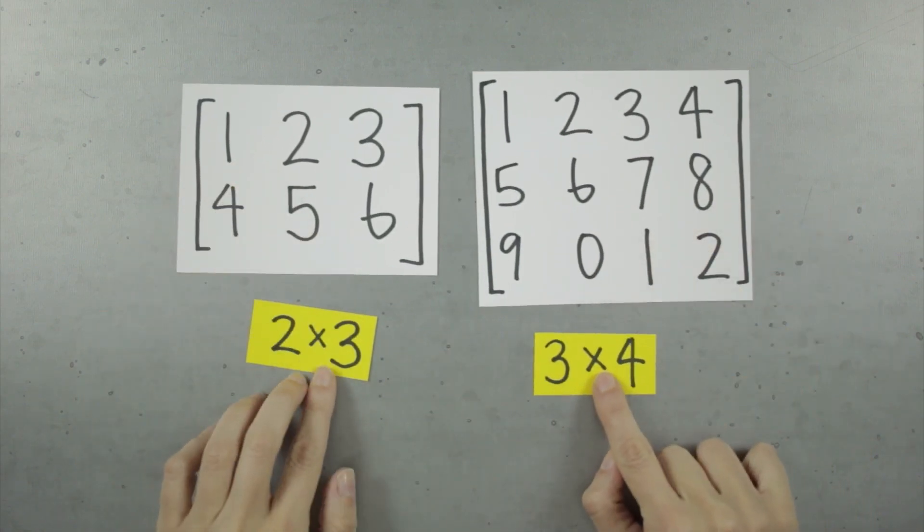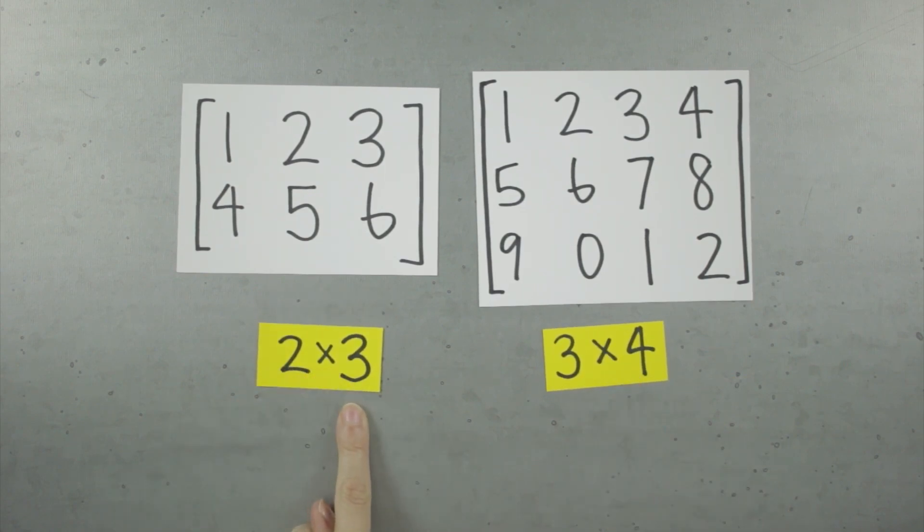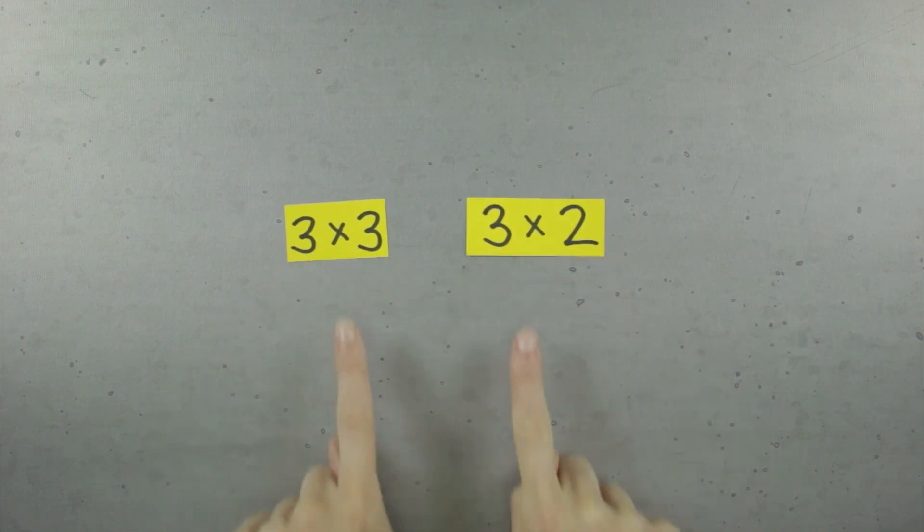So if we take the example of multiplying a 2 by 3 matrix by a 3 by 4 matrix, right away we know that the result is defined, since the number of columns in the first matrix matches the number of rows in the second. If these numbers don't match, then we know immediately that we can't do the multiplication and that the result is undefined. But besides comparing these numbers to see whether or not the multiplication is defined, we can also look at these two outside numbers to know the dimensions of the result. It'll be 2 by 4. If we multiply a 3 by 3 by a 3 by 2, we know it's defined because these match, and we know the result will be a 3 by 2.